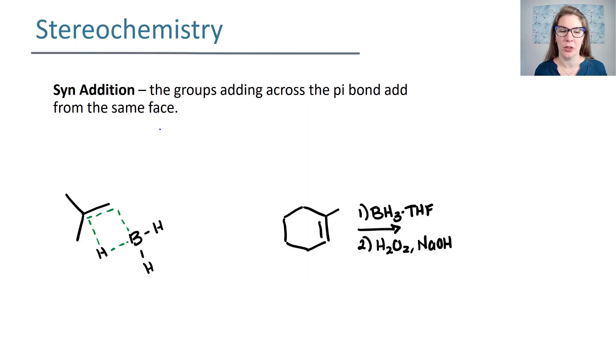Now let's look at stereochemistry. Your alkene that you started with was trigonal planar, right? So it was sp2 hybridized and all those atoms were in the same plane. Your BH3 trigonal planar, right? So all those atoms are in the same plane.